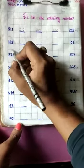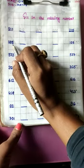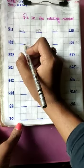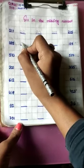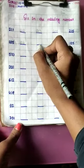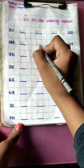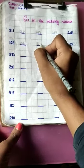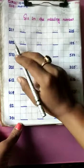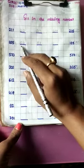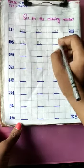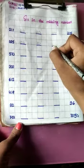Now next line: 105. Next number — which number is missing? 106. Next: 107. Now next — which number is missing? 105, 106, 107, 108. The answer is 108.